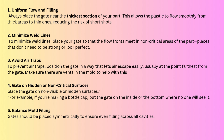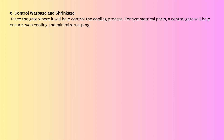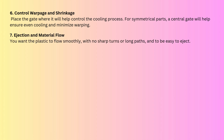The next point is controlling warpage and shrinkage. Warpage happens when different parts of the mold cool at different rates, so gate placement is very important for cooling. Place the gate where it will help control the cooling process. For symmetrical parts, a center gate helps ensure uniform cooling and minimizes warping.